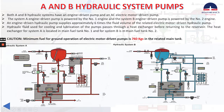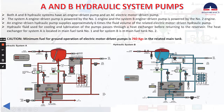Now let's talk about A and B hydraulic system pumps. Both A and B hydraulic systems have an engine driven pump and an AC electric motor driven pump. The system A engine driven pump is powered by the number one engine, and system B engine driven pump is powered by the number two engine. An engine driven hydraulic pump supplies approximately six times the fluid volume of the related electric motor driven hydraulic pump. Hydraulic fluid used for cooling and lubrication of the pumps passes through a heat exchanger — for system A it's here, for system B it's here — before returning to the reservoir. The heat exchanger for system A is located in main fuel tank number one, and for system B in main fuel tank number two.